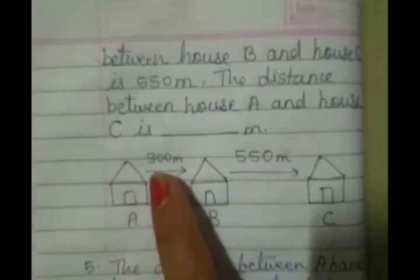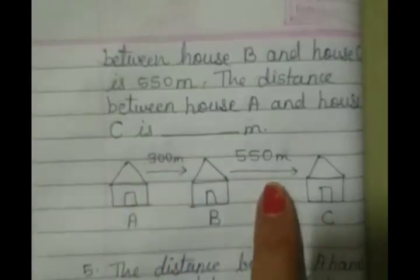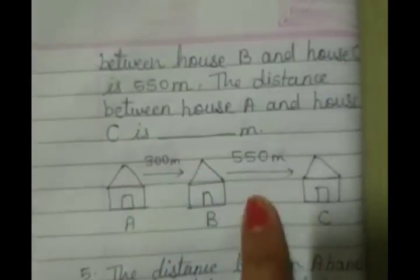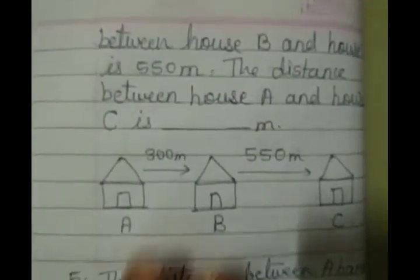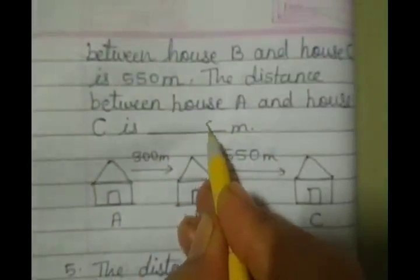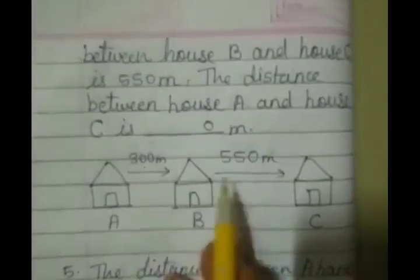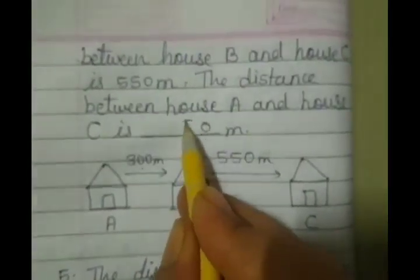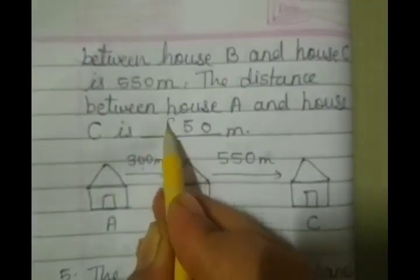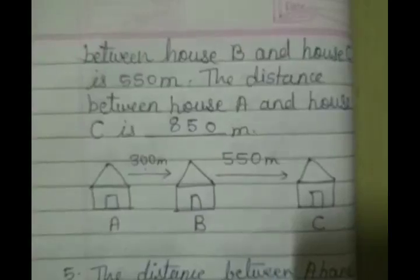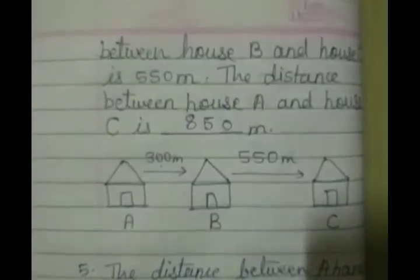So what we need to do? We are supposed to add both. So ones place 0 plus 0, you will get 0. Tens place 0 plus 5, 5. Hundreds place 3 plus 5, you will get 8. That is 850 meter.